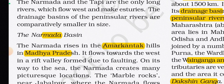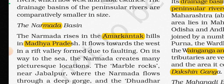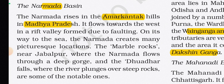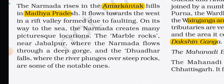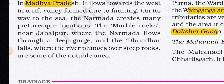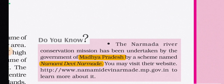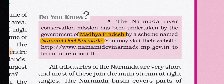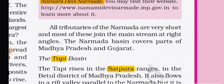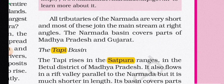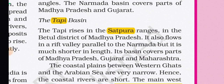The Narmada rises in the Amarkantak Hills in Madhya Pradesh and flows towards the west in a rift valley formed due to faulting. On its way to the sea, it creates picturesque locations — the Marble Rocks near Jabalpur, where the Narmada flows through a deep gorge, and the Dhuadhar Falls where the river plunges over steep rocks. The Narmada River Conservation Mission has been undertaken by the Madhya Pradesh government under the scheme 'Namami Devi Narmade'. All tributaries of the Narmada are very short and most join the mainstream at right angles. Its basin covers parts of Madhya Pradesh and Gujarat.